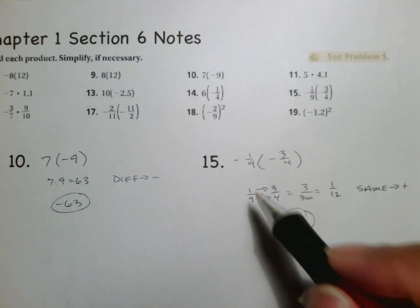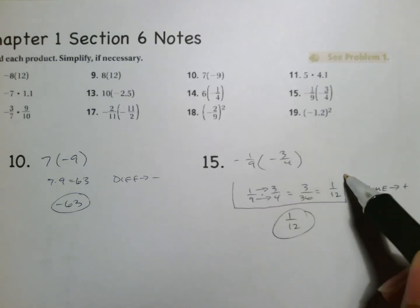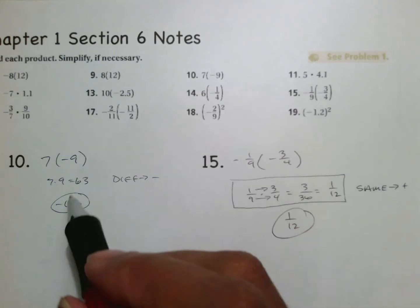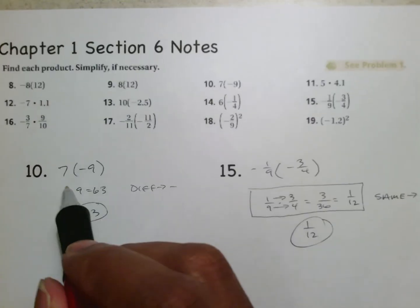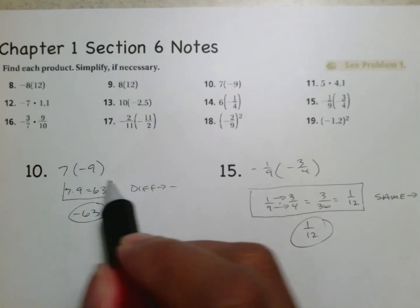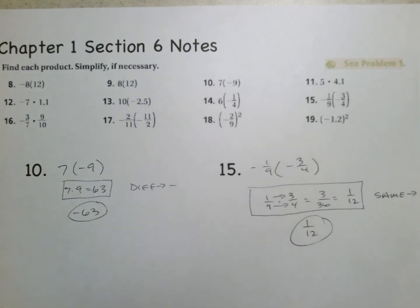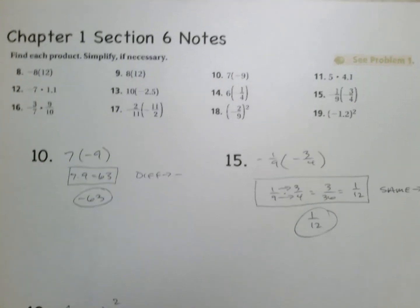The work you're going to show me today is this part — this is what gets your credit when you turn this in. Please make sure you're at least showing me the operational work for the number and then simply putting the sign on it. Do not just try to use the calculator with negatives and all that, because it's going to cost you some points at the end of the week.